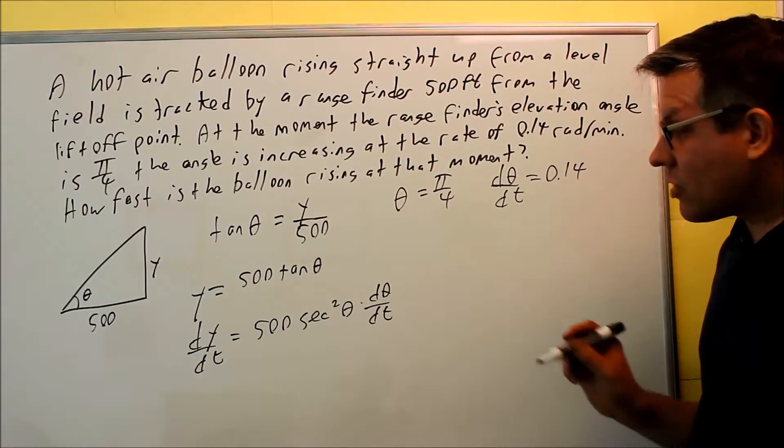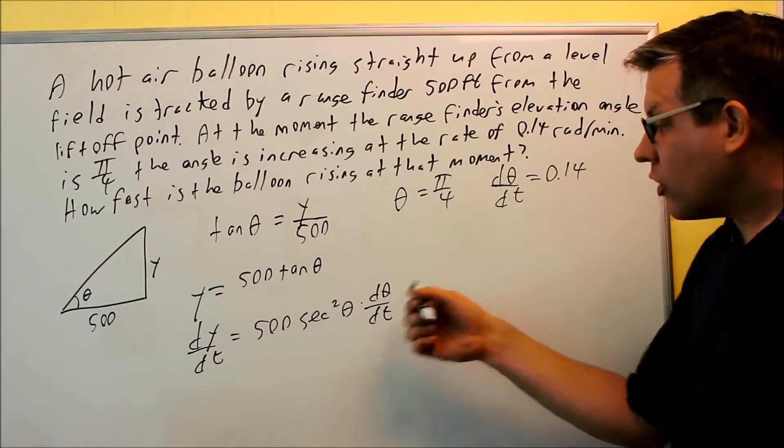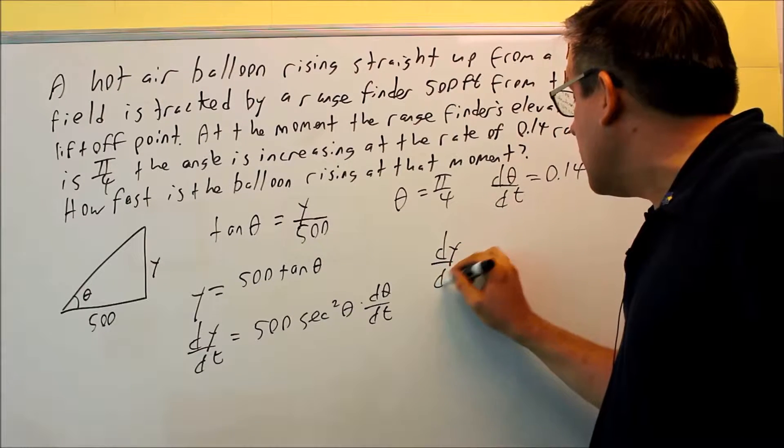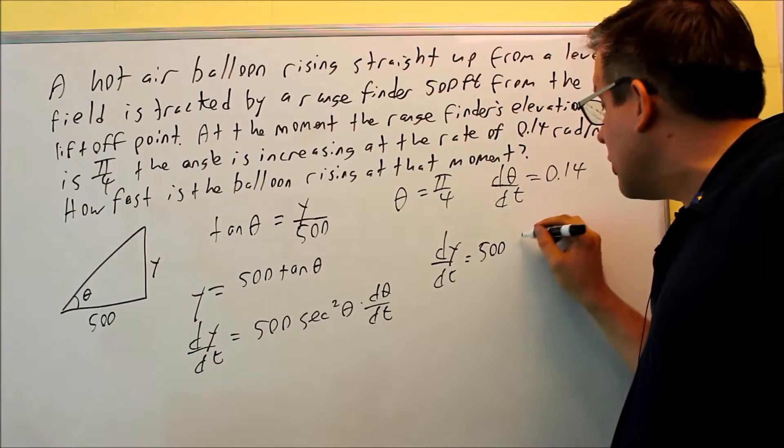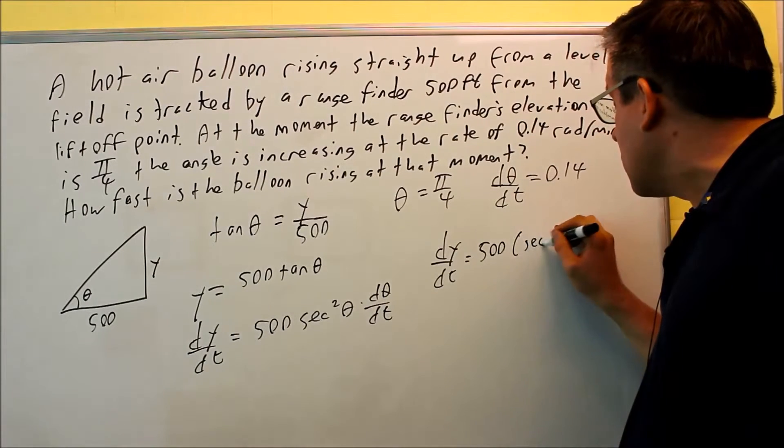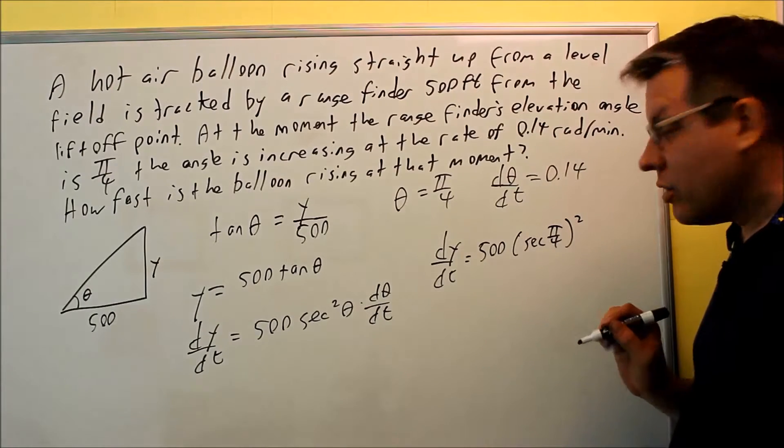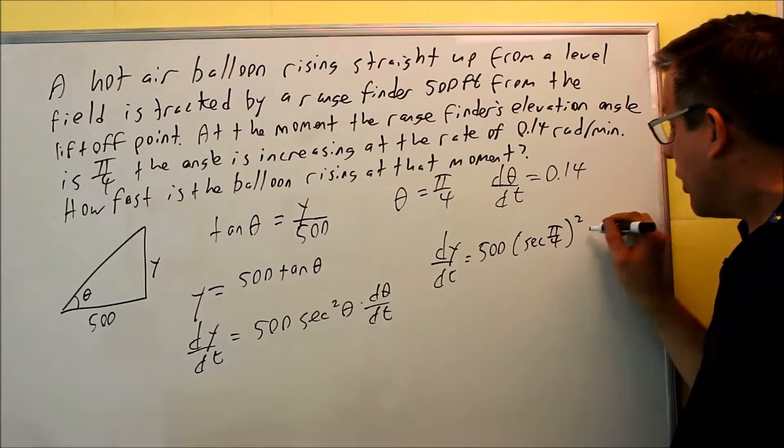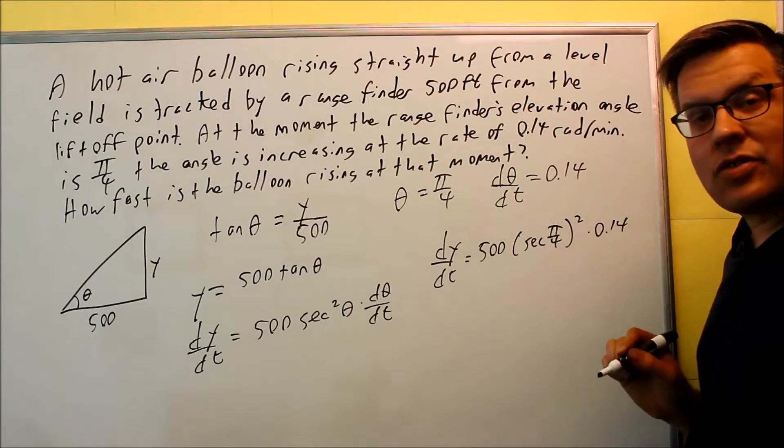Now that I have this complete, let's start putting in information that's been provided in order to find dy dt. So dy dt is equal to 500, and then I'm going to do secant of pi over 4 squared. That's your secant squared there, and then times 0.14. And if I just work this out, that's going to give us the answer.